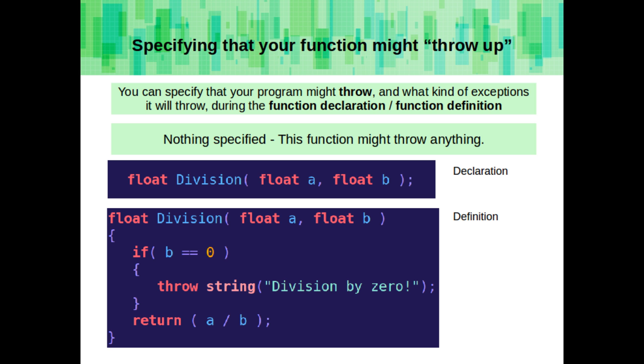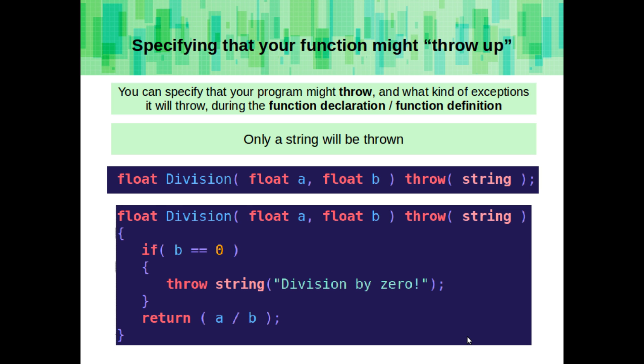You can specify that your program might throw, and what kind of exceptions it will throw, during the function declaration and definition. If you have nothing specified, the function could throw anything. With this declaration and definition, we are saying that our function will only throw an exception of type stream.